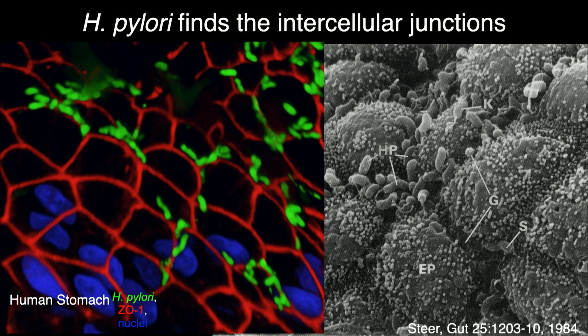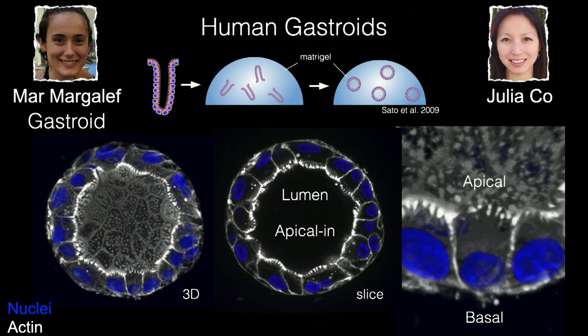Some bacteria actually attach to the epithelium, and those are the ones really associated with disease. Most of the virulence factors are adhesins, the type 4 secretion system, and things delivered to the epithelium — toxins like VacA. So it's the interaction with the host that causes disease, not necessarily the fact that H. pylori is in the mucus. They are very specific: they like to attach right over the epithelial junctions.